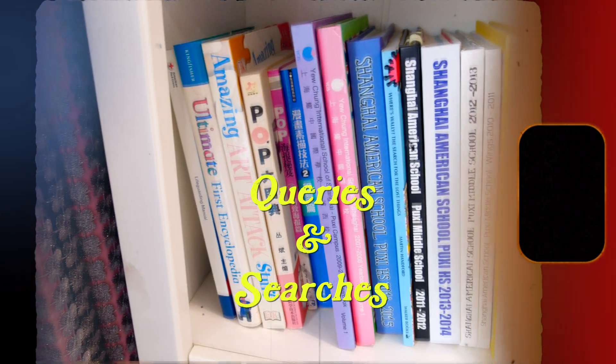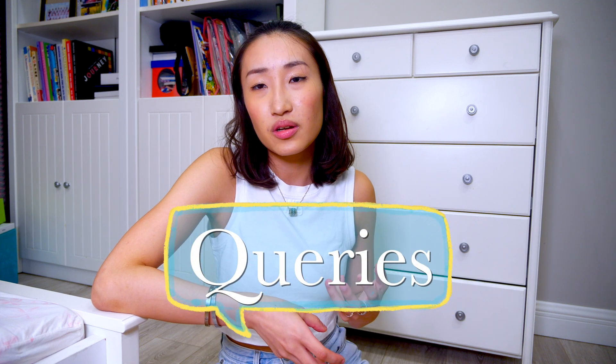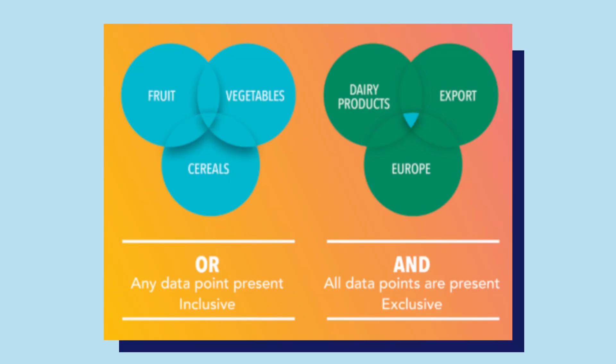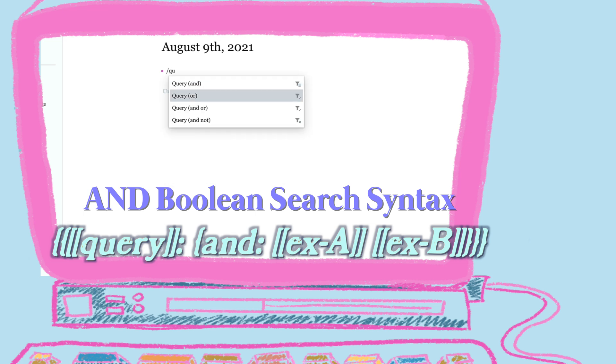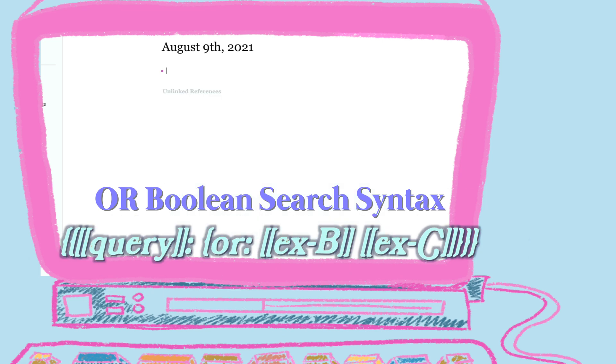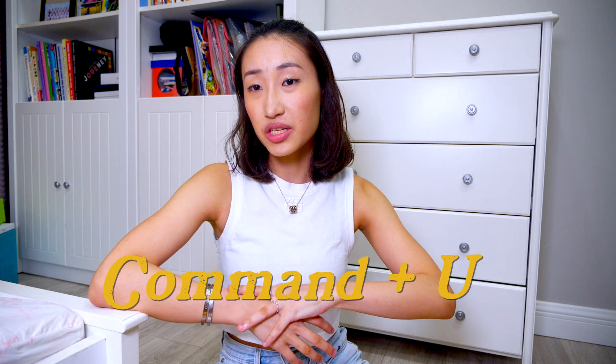How can you find what you're looking for? As your tags and links grow, you can use the query search with and, or, and not functions to navigate through your database. Roam's query uses boolean search logic: the and function means all criteria must be met; or means one or the other is inclusive. The query search in Roam will only show results that meet the set criteria — one of the biggest advantages of Roam is that you don't need to worry about organization as long as you link and tag your notes.